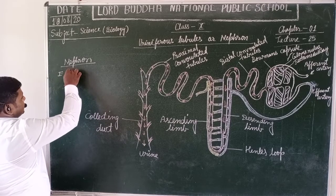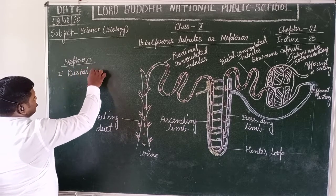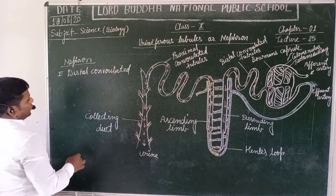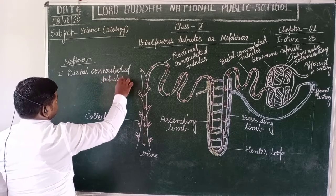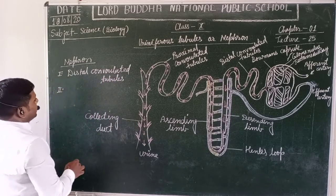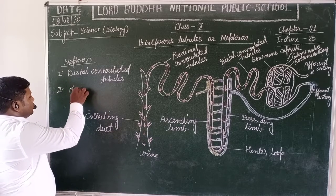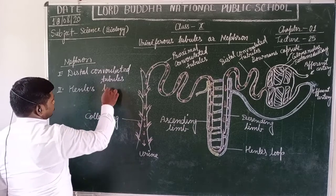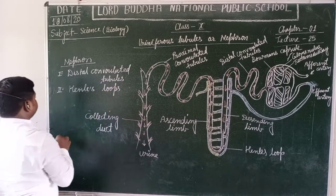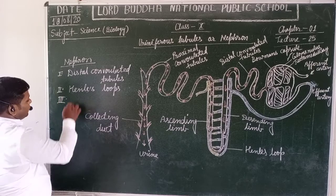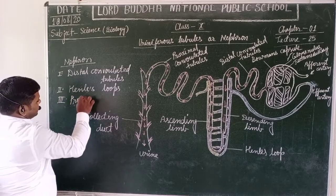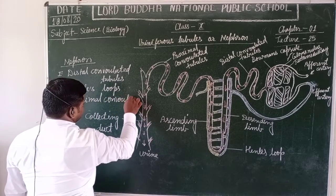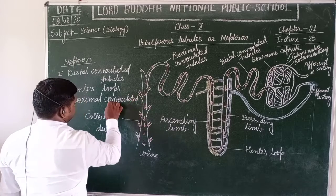So students, what we find here is that the uriniferous tubule consists of the following three structures: the first one is the Distal Convoluted Tubules; the second one is the Henle's Loop, named after the discoverer; and the third one is the Proximal Convoluted Tubules.